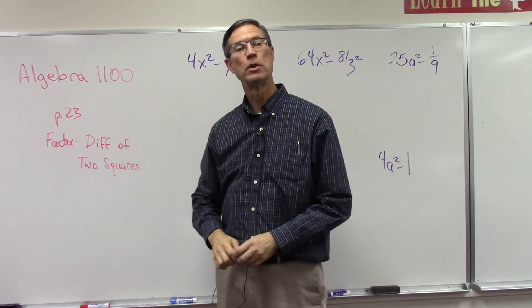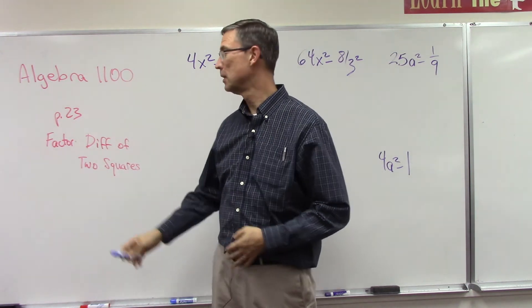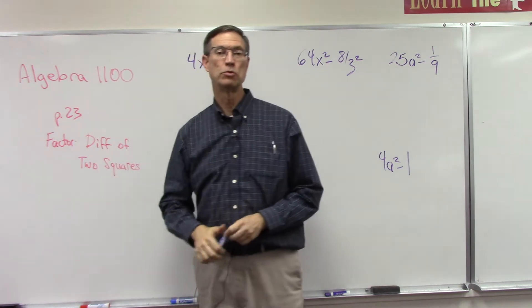This is Algebra 1100, page 23. It's called factoring the difference of two squares.